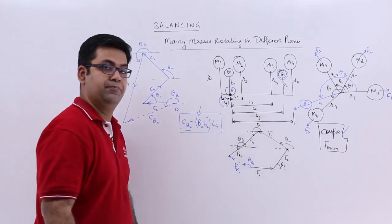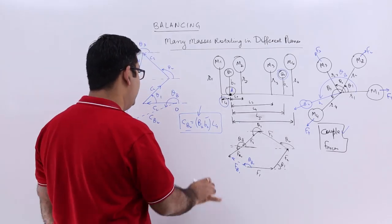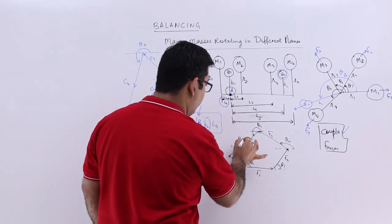Theta B1. Let us say this is theta B2 to avoid confusion. So this is B2.